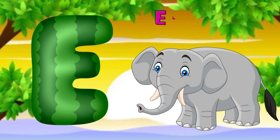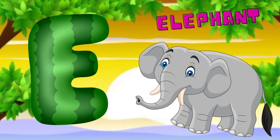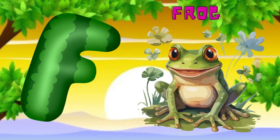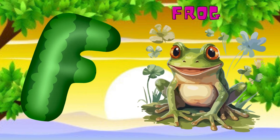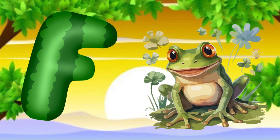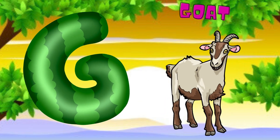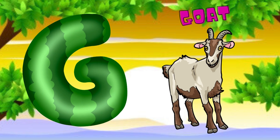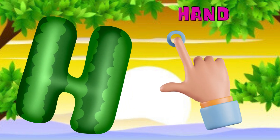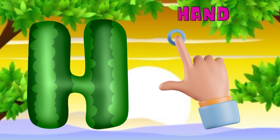E is for elephant, e-e-elephant. F is for frog, f-f-frog. G is for goat, g-g-goat. H is for hand, a-a-hand.